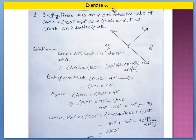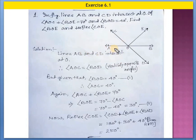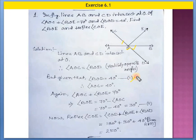Now Exercise 6.1, Question 1. In the figure, lines AB and CD intersect at O. If angle AOC plus angle BOE equals 70 degrees and angle BOD equals 40 degrees, find angle BOE and reflex angle COE. Draw this diagram in your exercise and then write the solution. Lines AB and CD intersect at O. Therefore, angle AOC equals angle BOD — these are vertically opposite angles. Given that angle BOD equals 40 degrees, so angle AOC also equals 40 degrees.